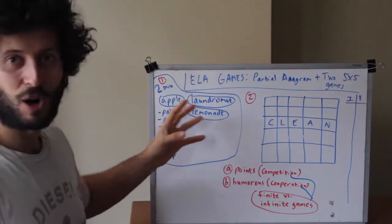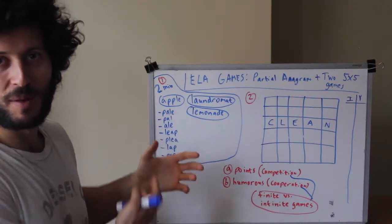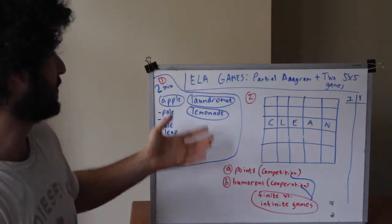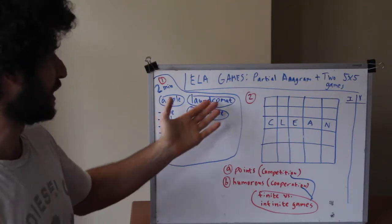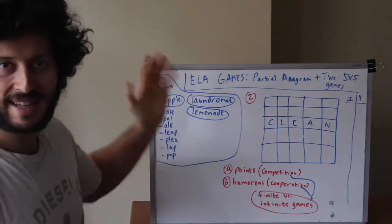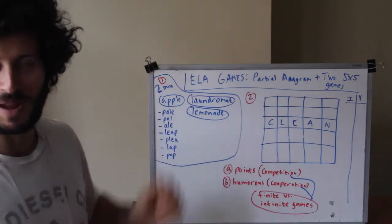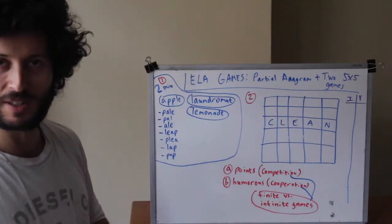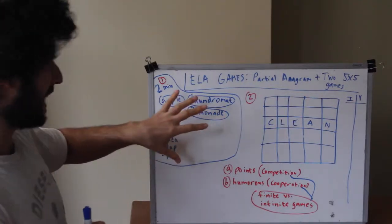And then here, clearly the larger the words the more words you can come up with. So in terms of a class you might want to try words like laundromat or lemonade and see how many you can come up with. You could see how many your friend can come up with, maybe you guys can work on it together. Alright so that's game one.